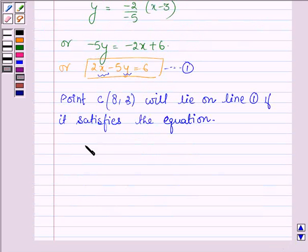the equation. That is, if we substitute x as 8 and y equal to 2, then we must get the right hand side as 6. So let us find the left hand side. So we have 2 * 8 - 5 * 2